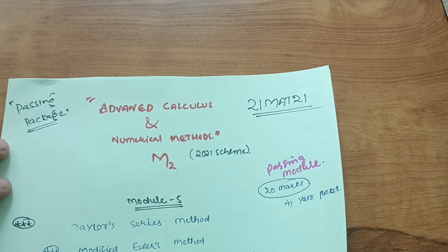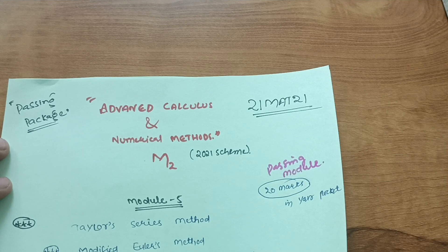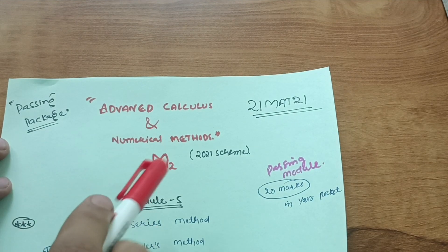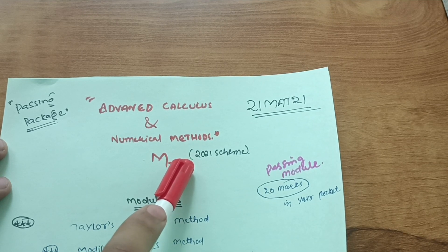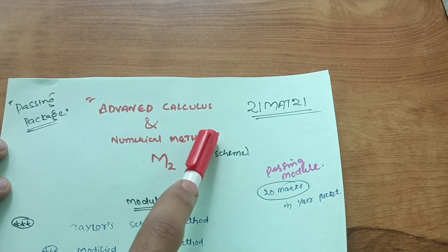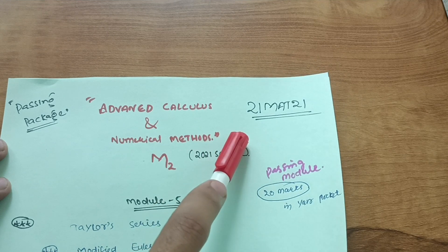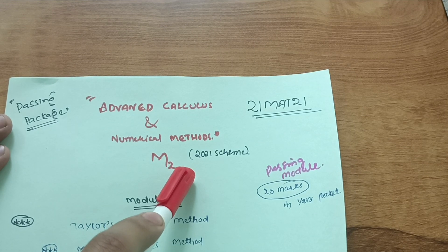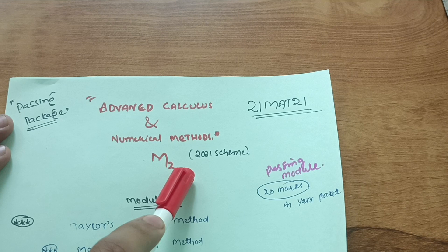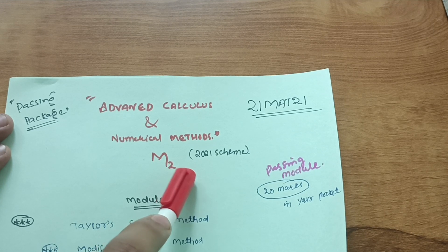Hello everyone, welcome back to my channel. Today I am presenting another passing strategy video — the passing package for Advanced Calculus and Numerical Methods, which is M2 for the 2021 scheme students. The subject code is 21MAT21. I have already completed passing packages for other mathematics subjects like M1, M3, and M4 — links are in the description box.